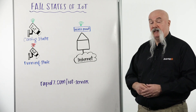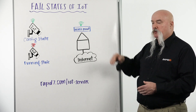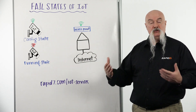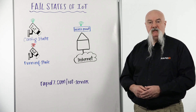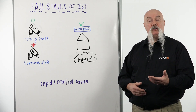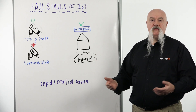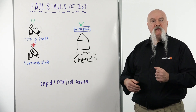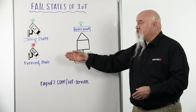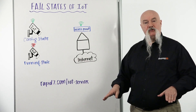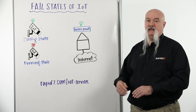The second fail state we like to look at is what happens when internet connectivity goes away. The access point is functioning normally and the device is connected to your internal home network, but internet connectivity goes away. Two things could possibly happen: one, you can no longer control your technology unless connected to your local network, or the technology fails to function altogether. One of our biggest concerns is that the technology drops into what's known as local mode.